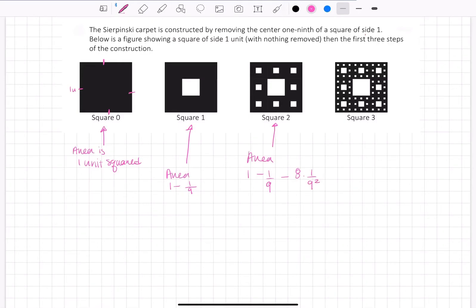And then here, hopefully by now you're seeing a pattern, because now for each of these eight squares, we're going to take out one, two, three, four, five, six, seven, eight more little squares. So hopefully that helps you see what to do on the next step.